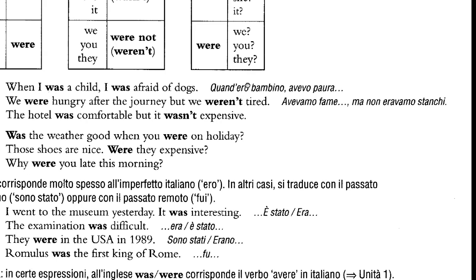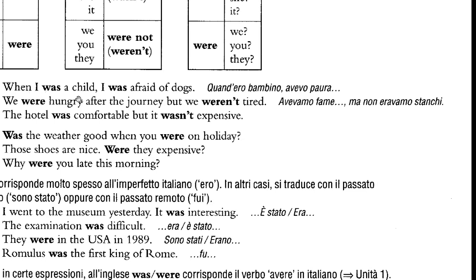Looking at the examples: 'When I was a child, I was afraid of dogs' — 'quando ero bambino, avevo paura dei cani'. Then: 'we were hungry after the journey, but we weren't tired' — 'avevamo fame dopo il viaggio, ma non eravamo stanchi'. And: 'the hotel was comfortable, but it wasn't expensive' — both using 'was' and 'wasn't' because the subject is always 'the hotel'.